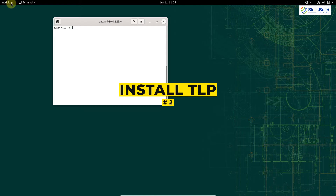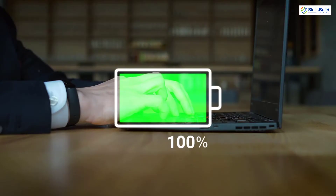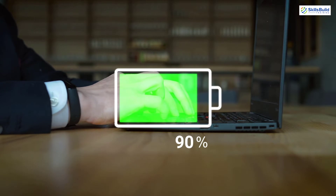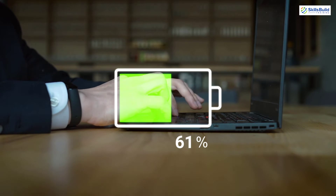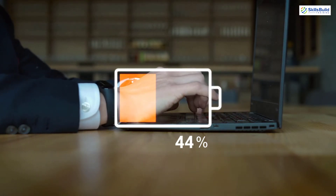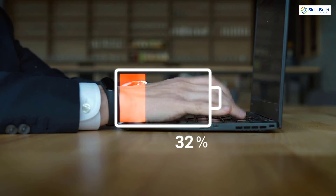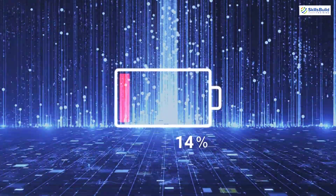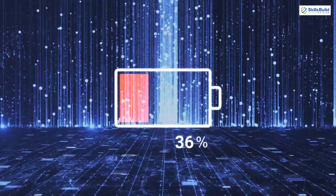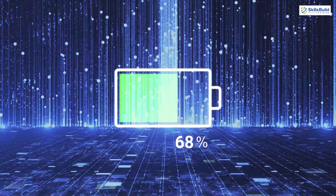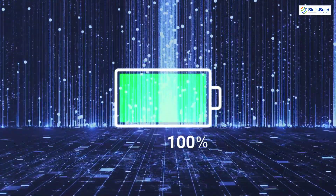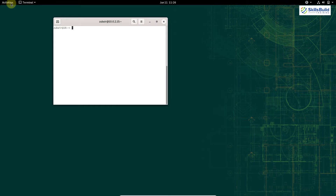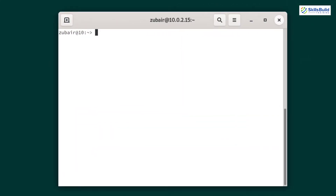Number 2: Install TLP for better power management. When you use any Linux distribution on a laptop, you may want to reduce battery usage along with better performance. Everyone wants their laptop's battery to last longer. To get the best out of battery, you can install TLP, which is an amazing tool that monitors your computer and automatically implements the best techniques to optimize battery life for your Linux system.